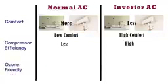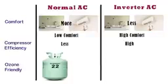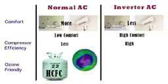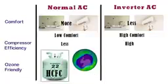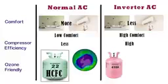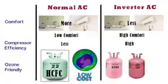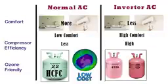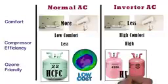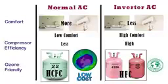Ozone friendly: Most normal air conditioners use R22 refrigerant, which contains HCFC — hydrochlorofluorocarbon — an additional chlorine component that destroys the ozone layer. Always enquire about the refrigerant used, as some installers prefer R22 since it is cheaper compared to R410A or R32. Most inverter ACs use R410A or R32 refrigerants, which are ozone friendly, as these contain only HFC — hydrofluorocarbon.